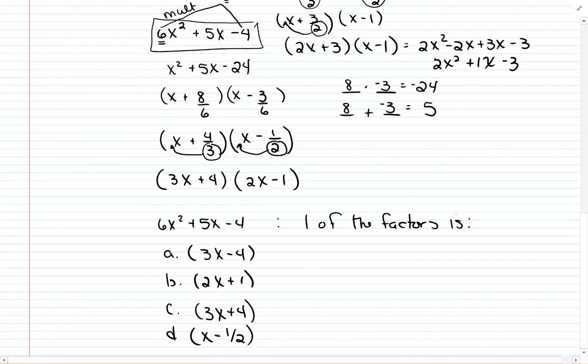And then you can actually, plus 1 half there. You can go through and see now, you have to factor it, and then one of the factors happens to be, and the answer here would be the 3x + 4. That's one of the factors of 6x² + 5x - 4.